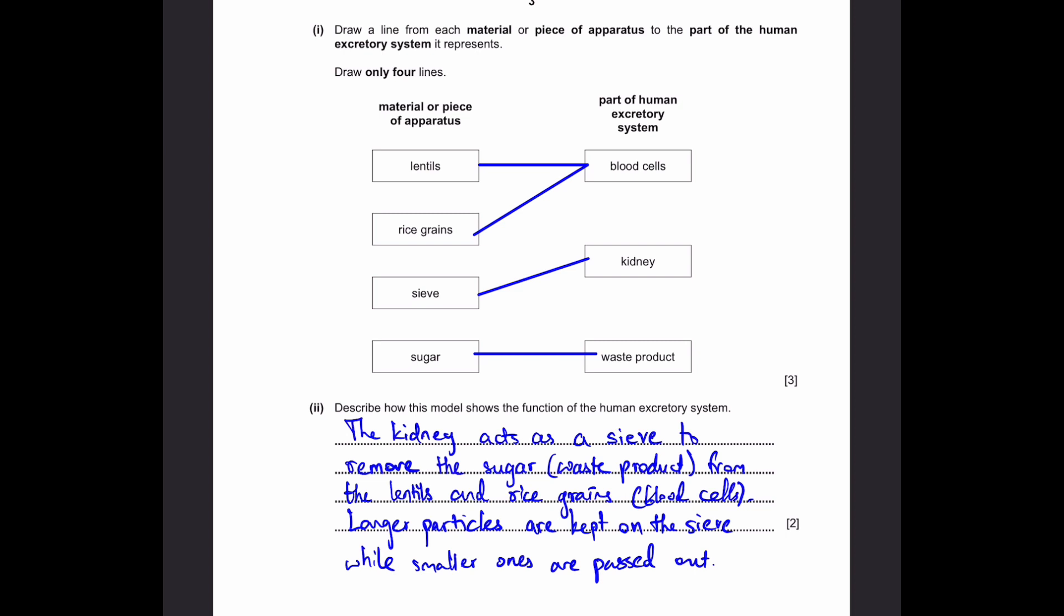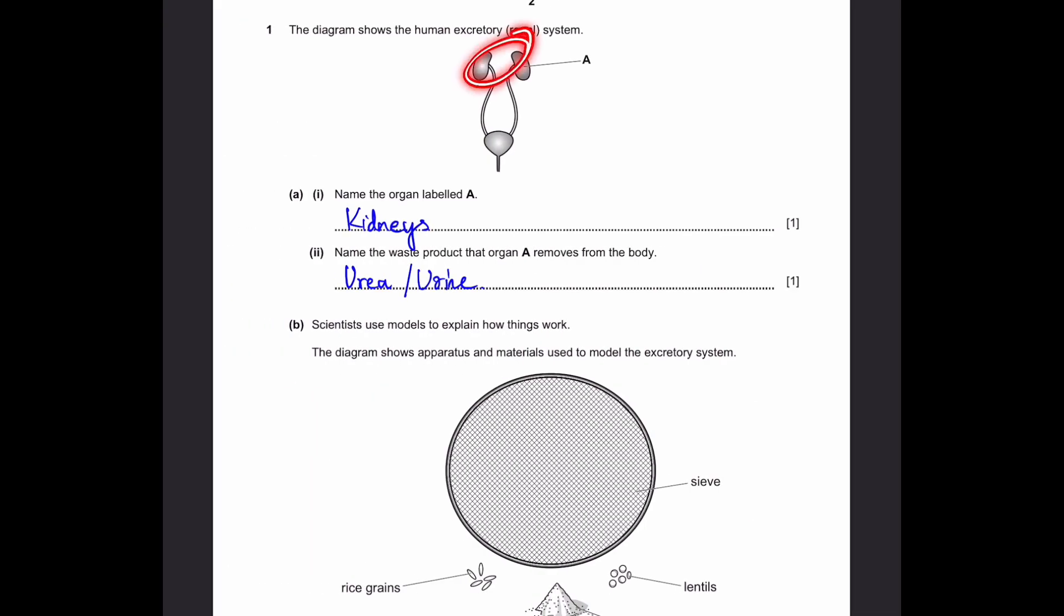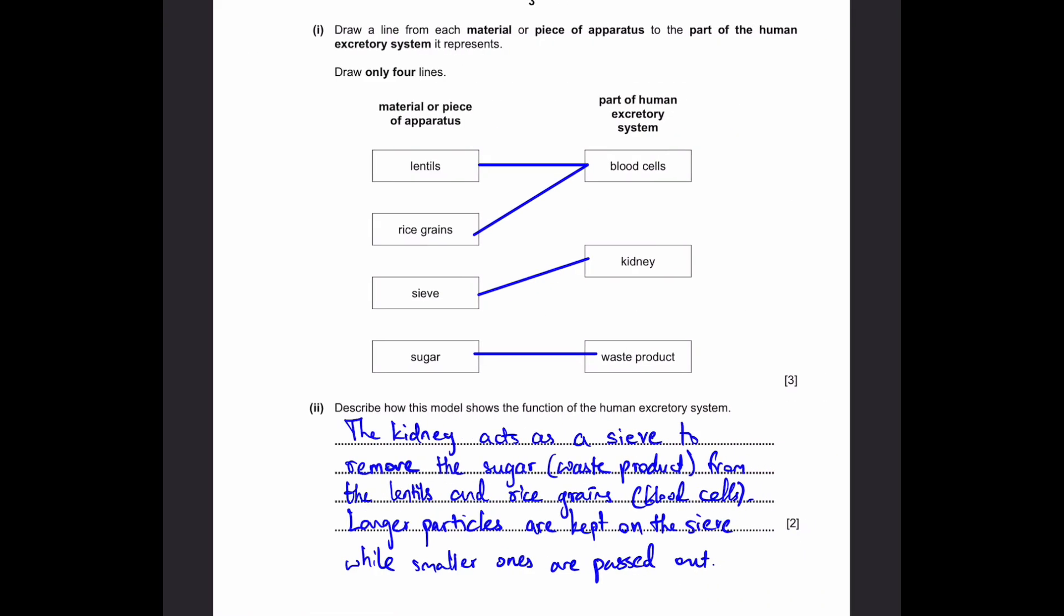Part 1: Draw a line from each material or piece of apparatus to the part of the human excretory system it represents. So the kidneys filter out the waste products from the blood cells or the blood, and that's simply the sieve. Because the sieve filters out the waste product, sugar, from these.